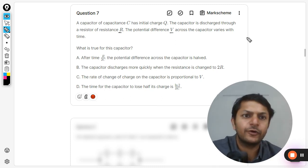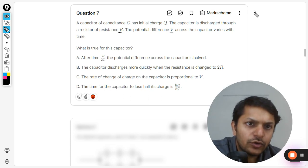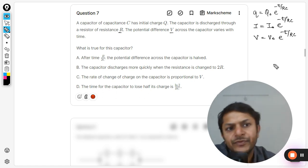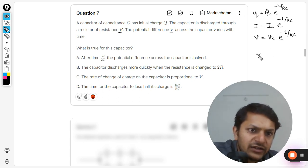We would be using the transient formulas here, so we can say that the Q value will be equal to Q₀e^(-t/RC). Similar is the variation for the current, so it's exactly the same, and exactly the same is the variation for potential difference across the capacitor. The RC factor is known as time constant, which is written by tau.